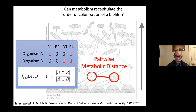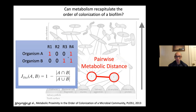For each pair of microbes we computed a metabolic distance — a pairwise metabolic distance based on profiles of which reactions each organism contains. For example, organism A contains reactions one and four, organism B contains reactions three and four. From these binary strings, obtained from annotated genomes, we computed the Jaccard distance to quantify how metabolically different two organisms are. This can be done for any pair, yielding a matrix of similarity or dissimilarity based on metabolic capabilities.